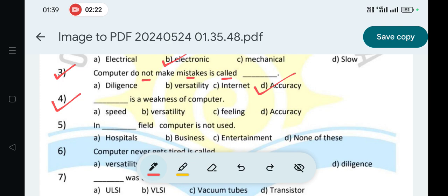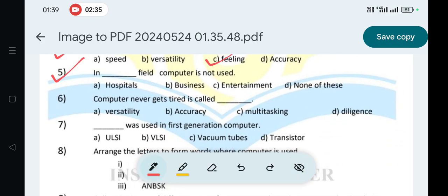Next question number four: dash is a weakness of computer. Feeling. Next question five: in dash field computer is not used. None of this. Next, question six: computer never gets tired is called dash.